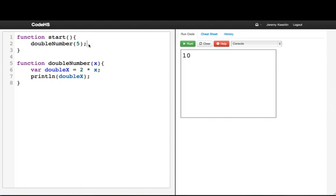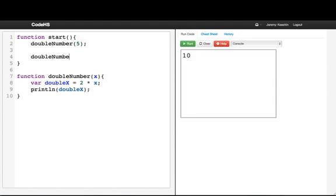Let's look at another example. I can call double number with 12. So first I'll print out 10, and then I'll print out 24.